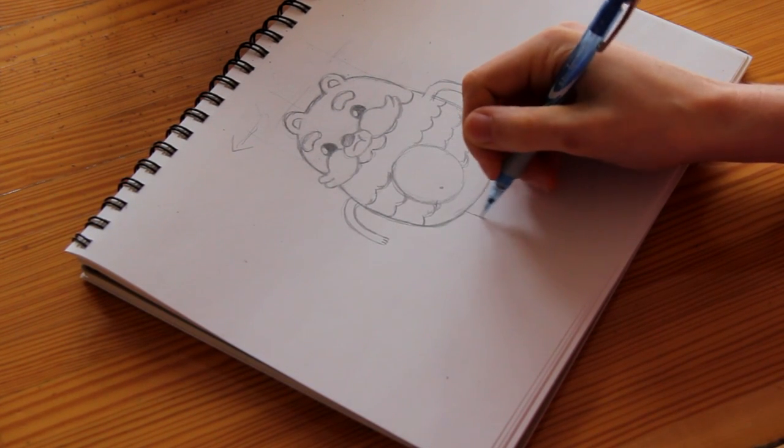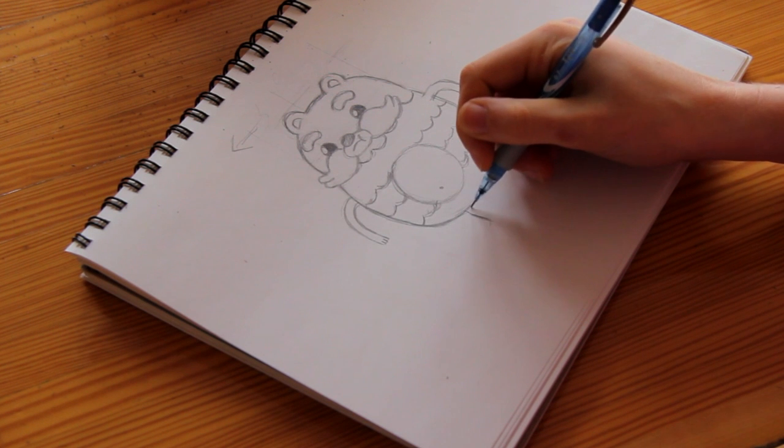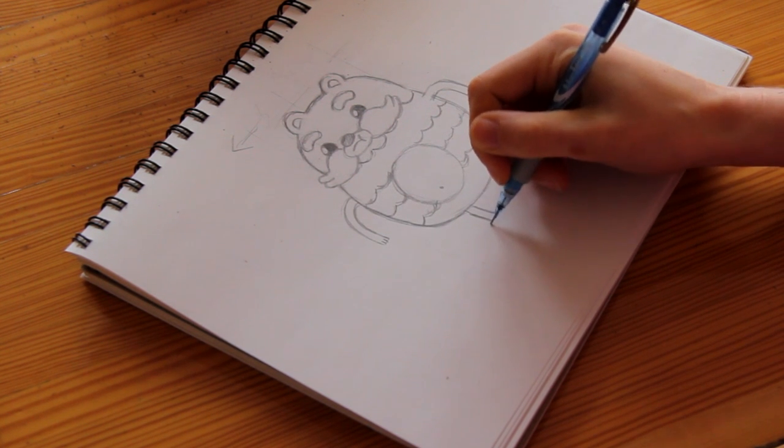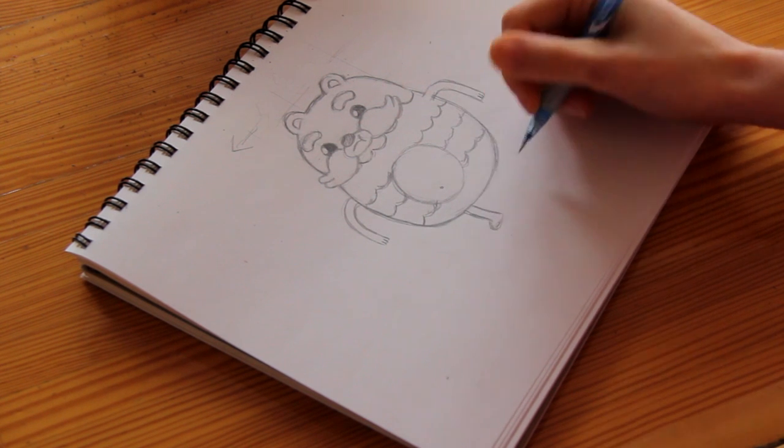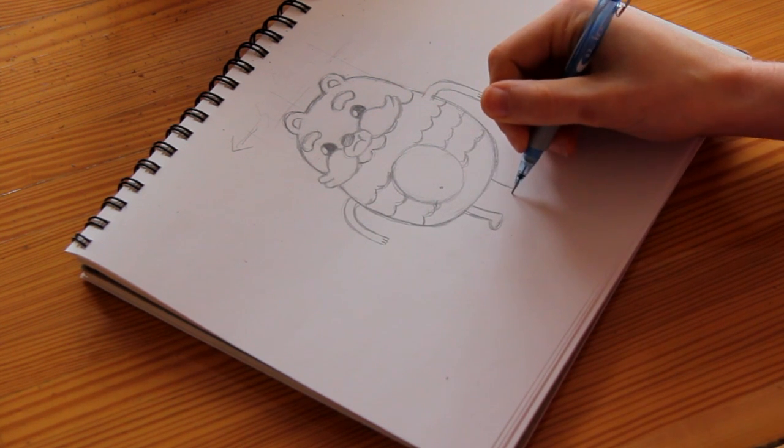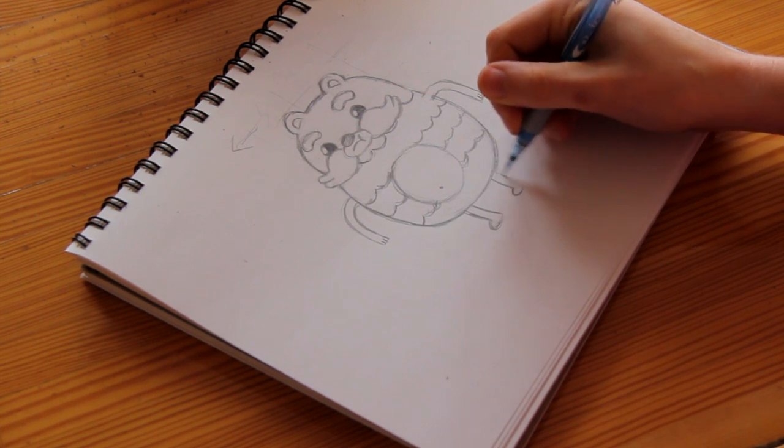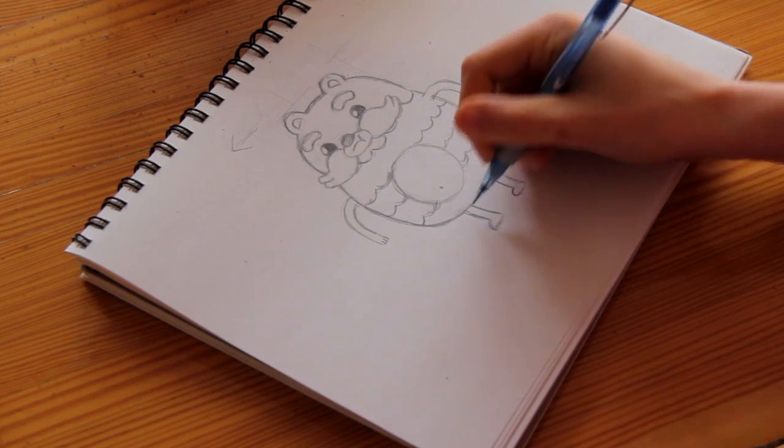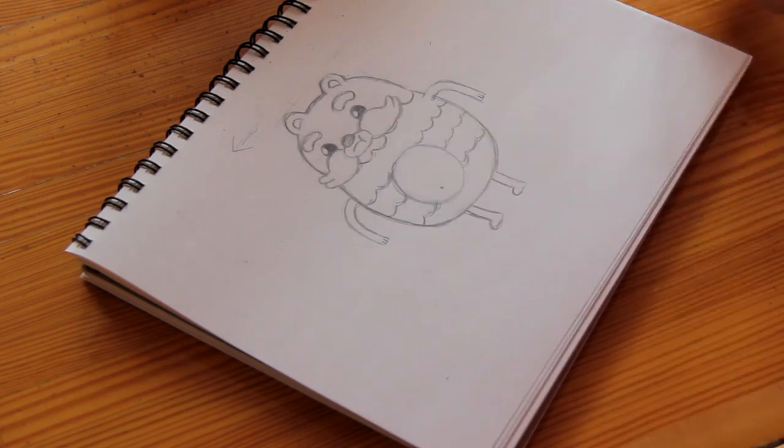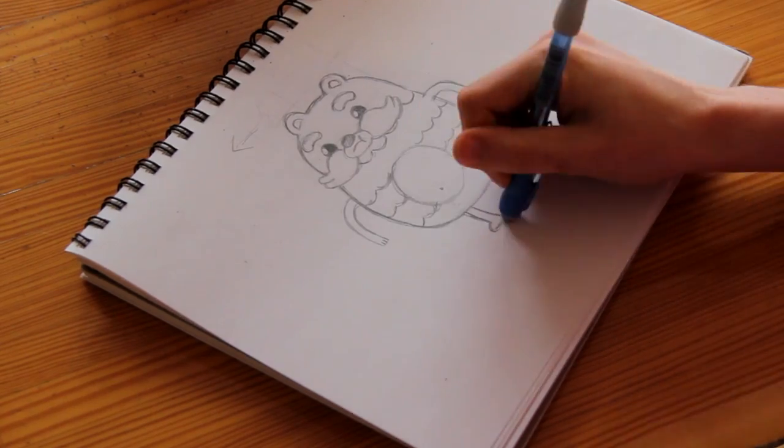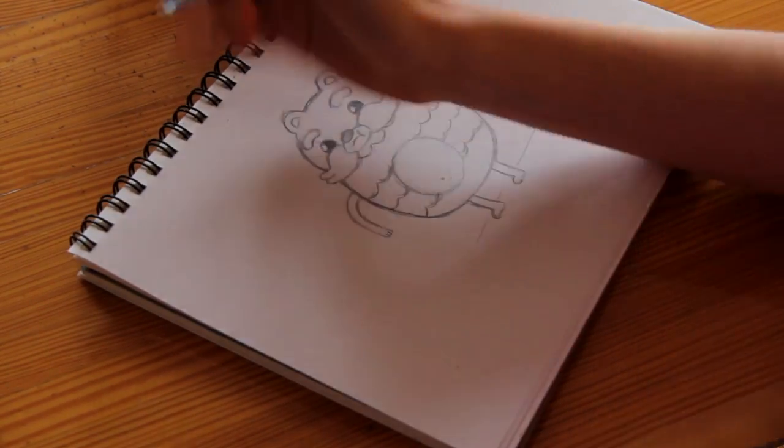And then he's got a little feetsies, which is very thin. I don't even know how he supports himself on these little feet. On one foot, two feet. All right. So that's pretty much how you do a sketch version of Pasta Bear.